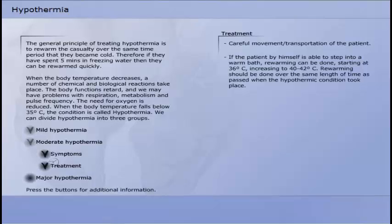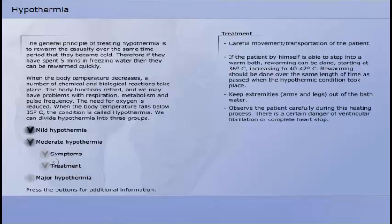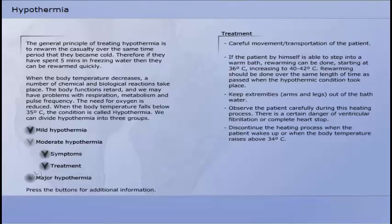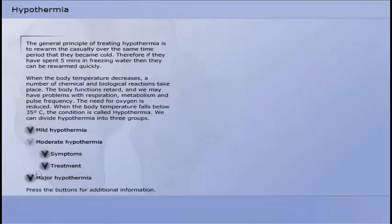The treatment of moderate hypothermia is careful movement and or transportation of the patient. If the patient by himself is able to step into a warm bath, re-warming can be done, starting at 36 degrees Celsius, increasing to 40 to 42 degrees Celsius. Re-warming should be done over the same length of time as past when the hypothermic condition took place. Keep extremities out of the bath water. Observe the patient carefully during this heating process. There is a certain danger of ventricular fibrillation or complete heart stop. Discontinue the heating process when the patient wakes up or when the body temperature raises above 34 degrees Celsius. Bring the patient to the hospital as soon as possible.